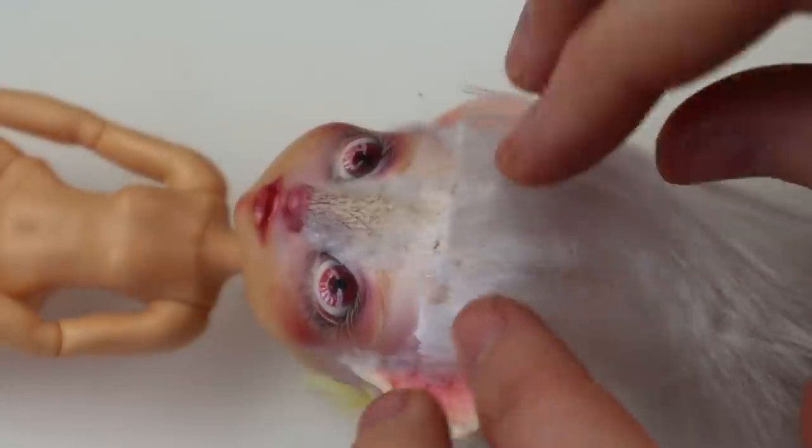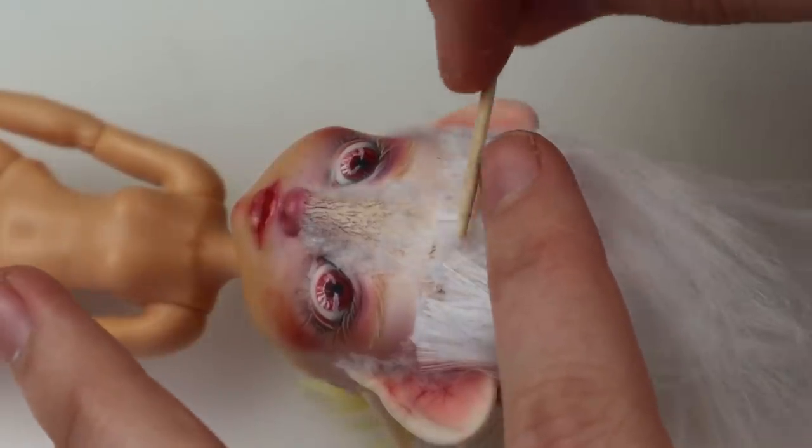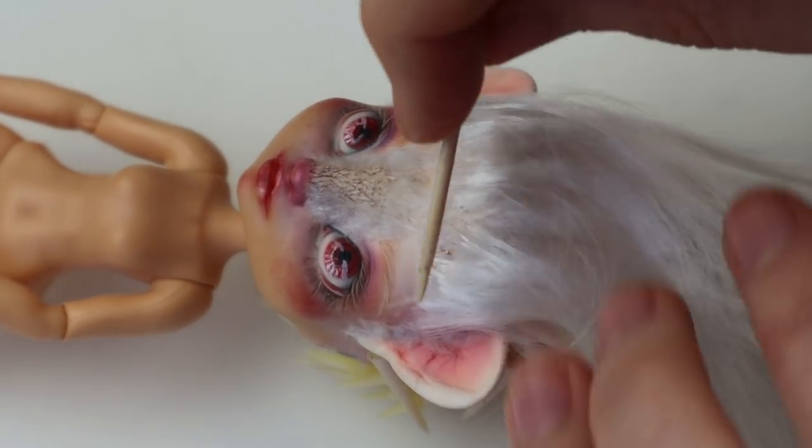After adding fluff to the sides I started gluing hair from the top of the forehead. This was pretty easy thanks to my doubtful skills at fur sculpting.